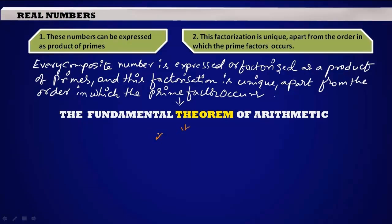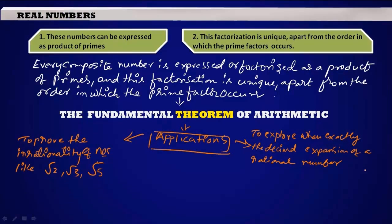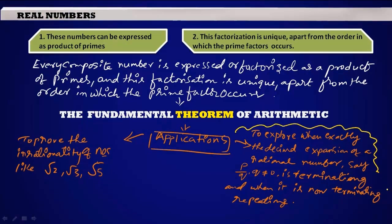So we learned what is the fundamental theorem of arithmetic. Now let us see what are its applications. The first one: it is applied to prove the irrationality of numbers like root 2, root 3, root 5. The other important application is to explore when exactly the decimal expansion of a rational number, say p by q (q not equal to 0), is terminating and when it is non-terminating repeating. This is all about the fundamental theorem of arithmetic.